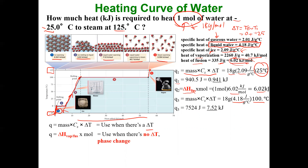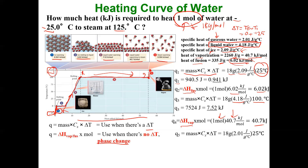For Q4: at 100°C the curve flattens — I stay at 100°C but convert all liquid into gas. No temperature change, only a phase change, so I use the enthalpy of vaporization. One mole times 40.7 kJ/mol gives 40.7 kilojoules. For Q5: going from steam at 100°C to steam at 125°C — a temperature change — I use Q equals mcΔT with the specific heat of steam, 2.01 J/g°C, and a delta T of 25°C, giving 0.904 kilojoules.